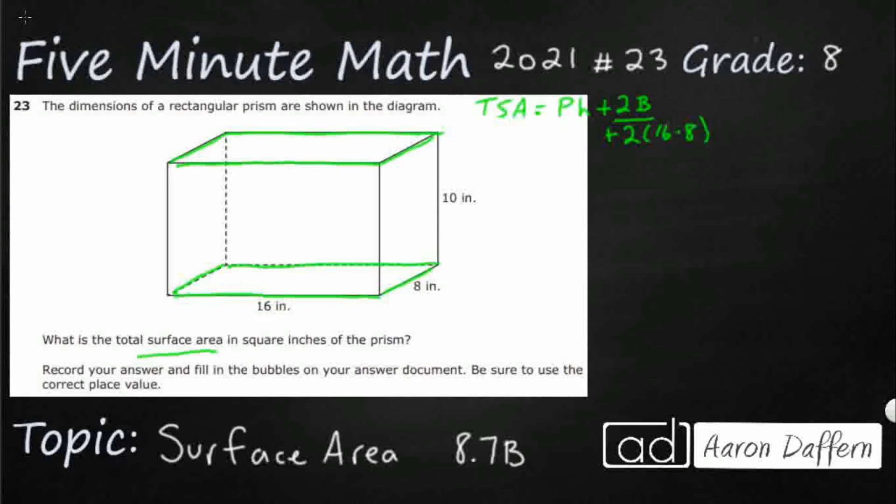I'm going to add to whatever this PH is. So let's just do it the long way. We'll figure out where that PH comes from. If I wanted to just take the four rectangles that connect my two bases, I just want to figure out what those are.